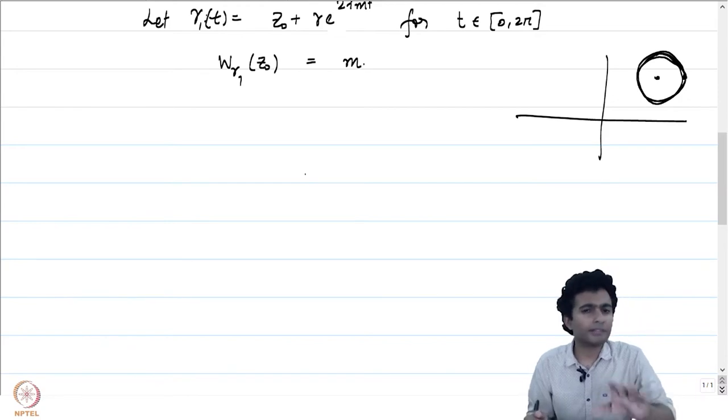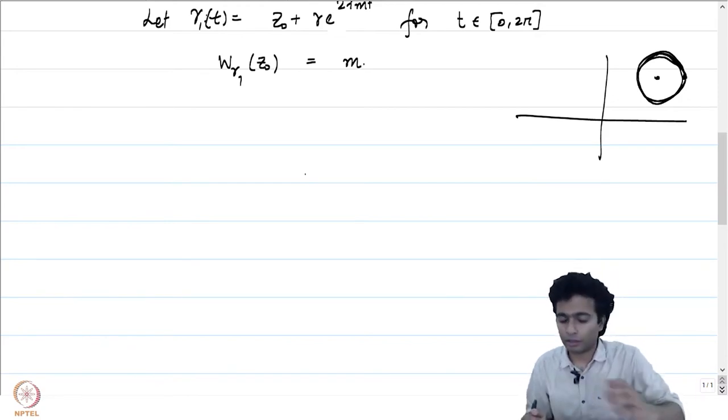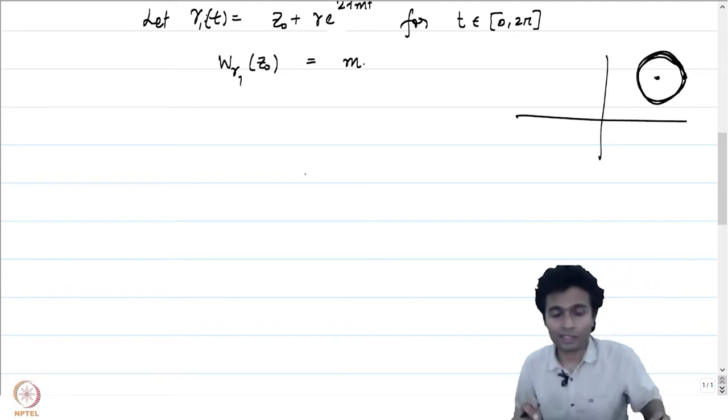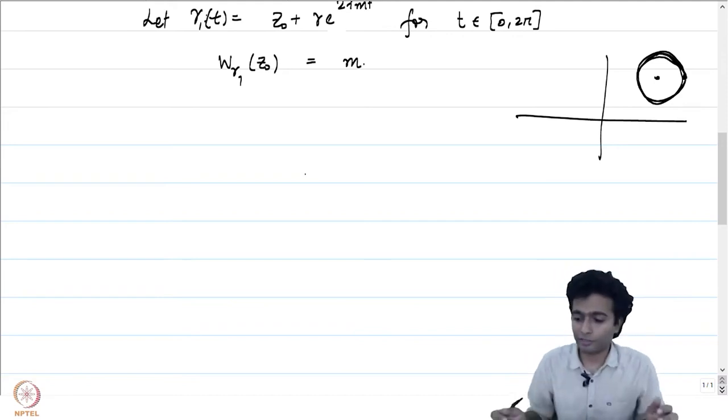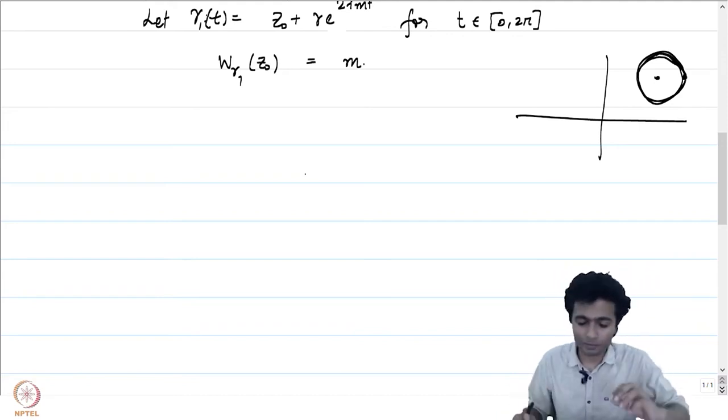As expected, since the winding number counts the number of times the curve winds around a point, it should be an integer. We will come to that only in the later part of this lecture. Initially, let us explore some of the nice properties of winding numbers that we can easily establish.